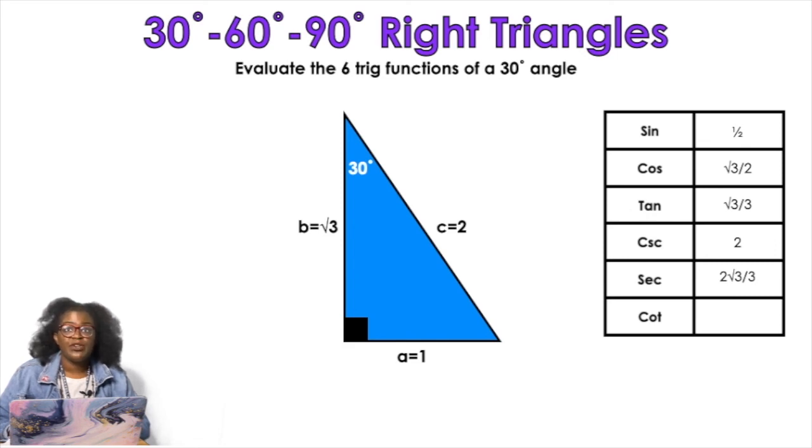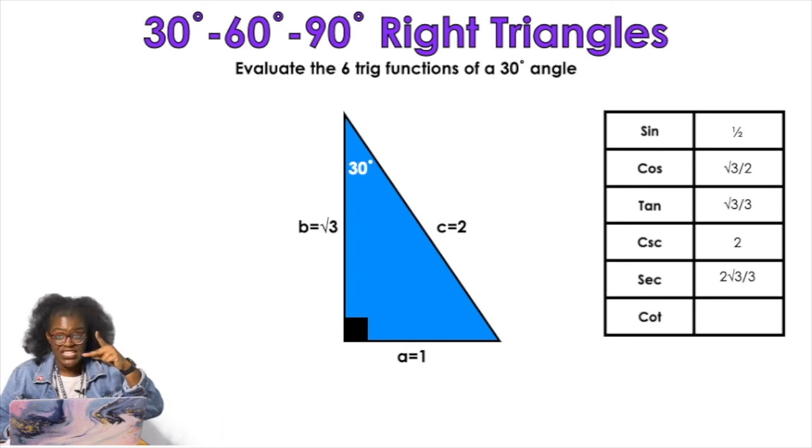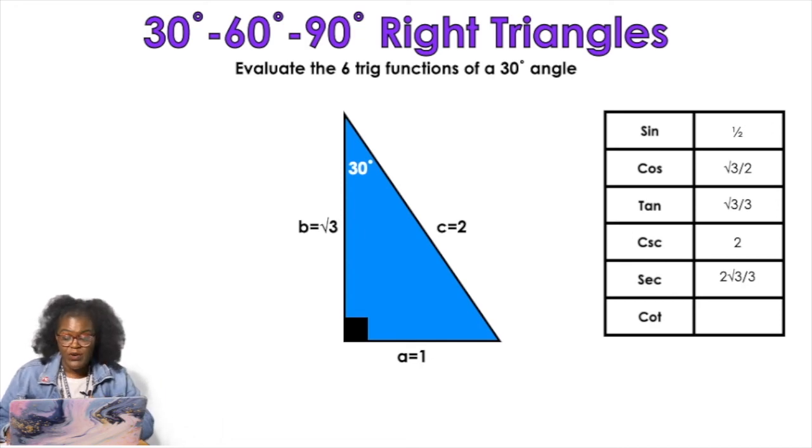Finally, cotangent is the reciprocal of tangent. The tangent was root 3 over 3, so its reciprocal is 3 over root 3, which rationalized is just the square root of 3. That's the end of this lesson! Like, comment, share, and subscribe. Go back through and see if you can do the problems without my help. Tell somebody about the channel — have a wonderful day and I'll see you in the next one!